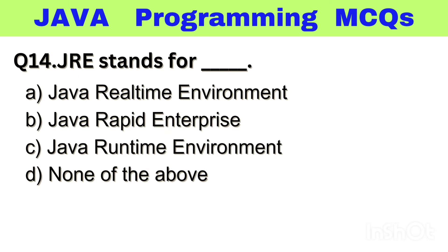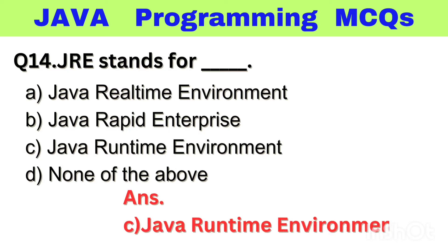Question number 14. JRE stands for dash. Option A: Java Realtime Environment, B: Java Rapid Enterprise, C: Java Runtime Environment, D: None of the above. The right answer is option C, Java Runtime Environment.